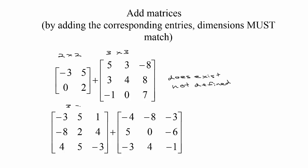This second pair works: we have a 3 by 3 plus a 3 by 3. Since the dimensions match, for each entry in the first matrix there's a corresponding entry in the second matrix, and we just add those corresponding entries. Negative 3 plus negative 4 would be negative 7, 5 plus negative 8 would be negative 3, 1 and negative 3 would be negative 2.